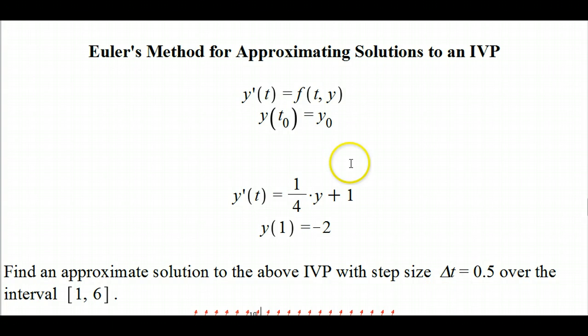So this is your typical first order equation. You've got the derivative of your function as some combination of t and y possibly, and it takes on a certain value, y sub 0, at a given time, t sub 0.